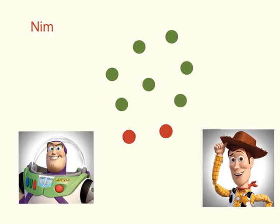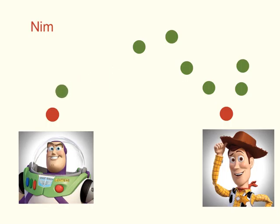If you master Nim7, try adding some extra counters. Here, Buzz and Woody are playing Nim9. Is the strategy the same? And is it better to go first or second this time?